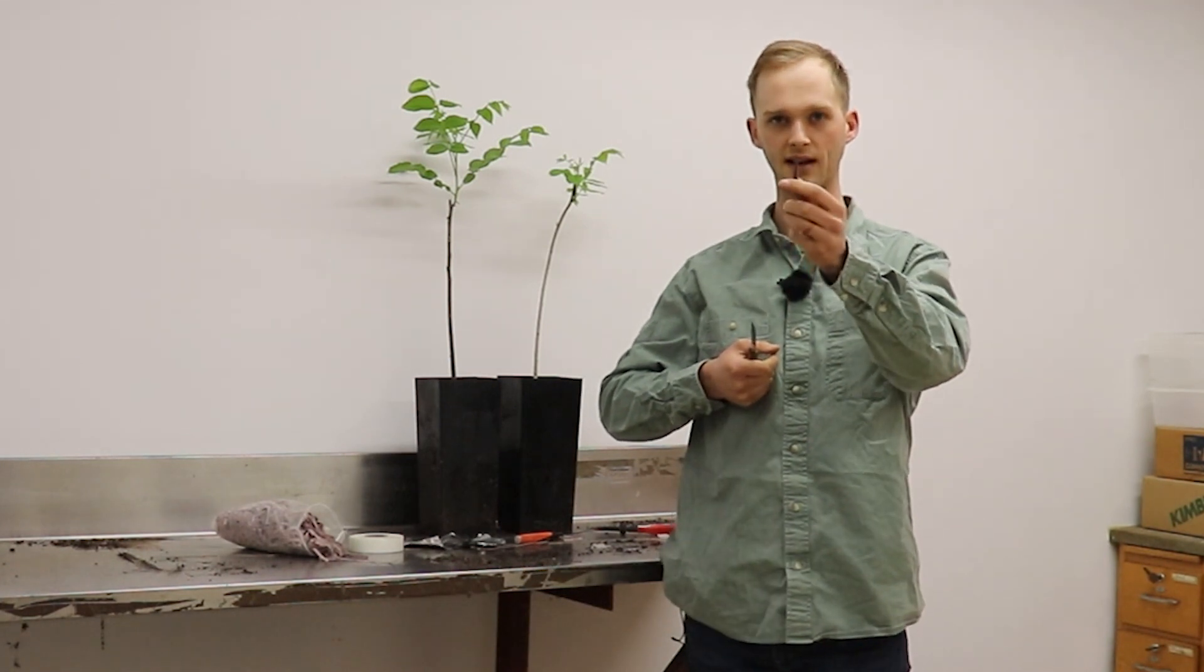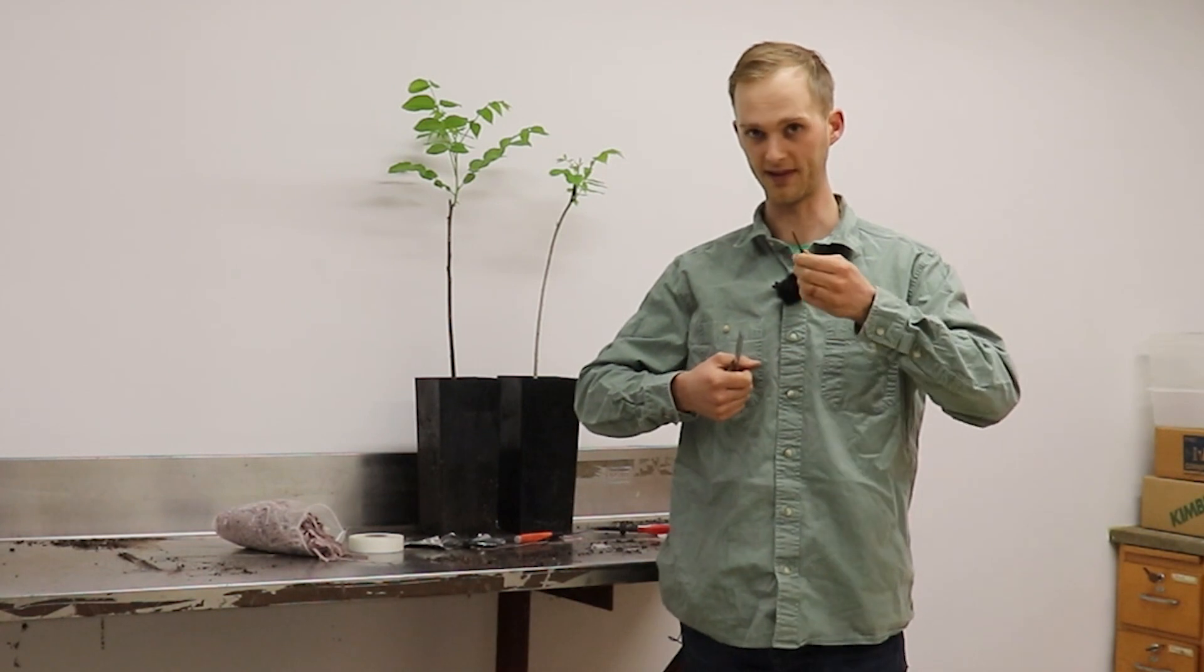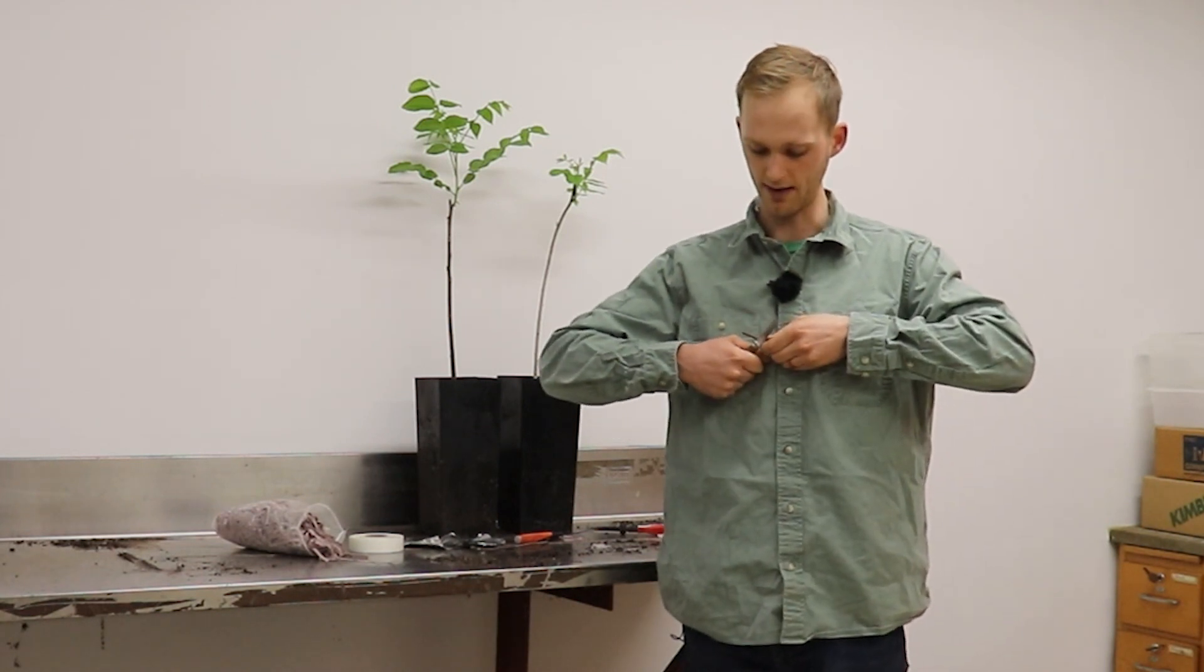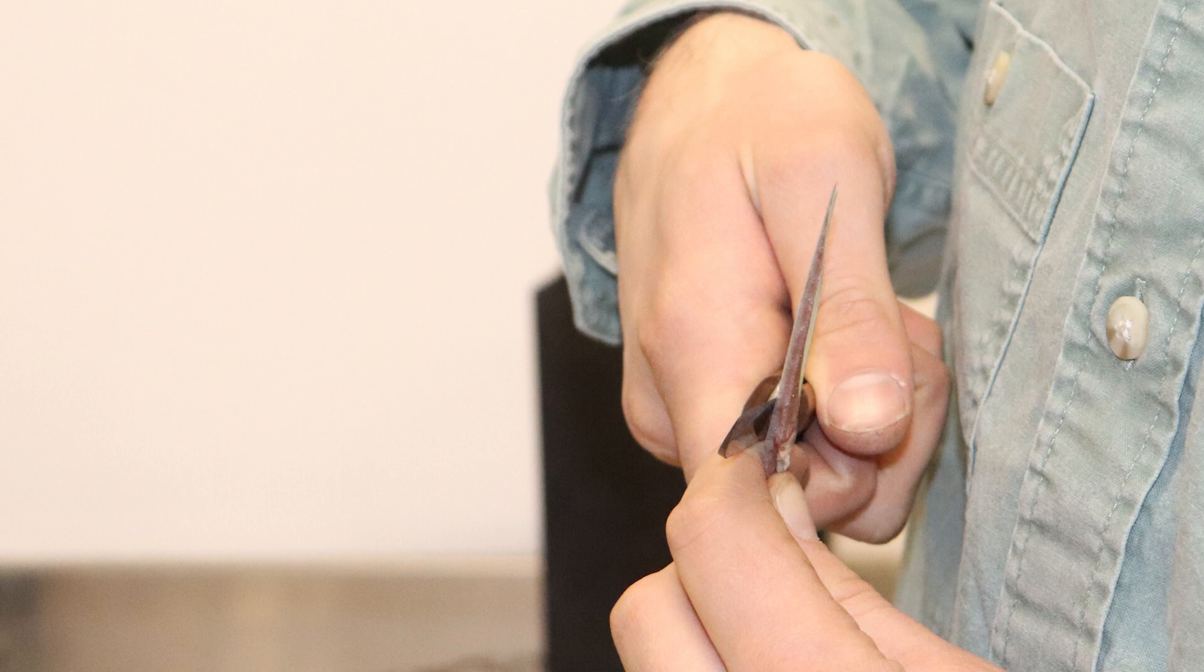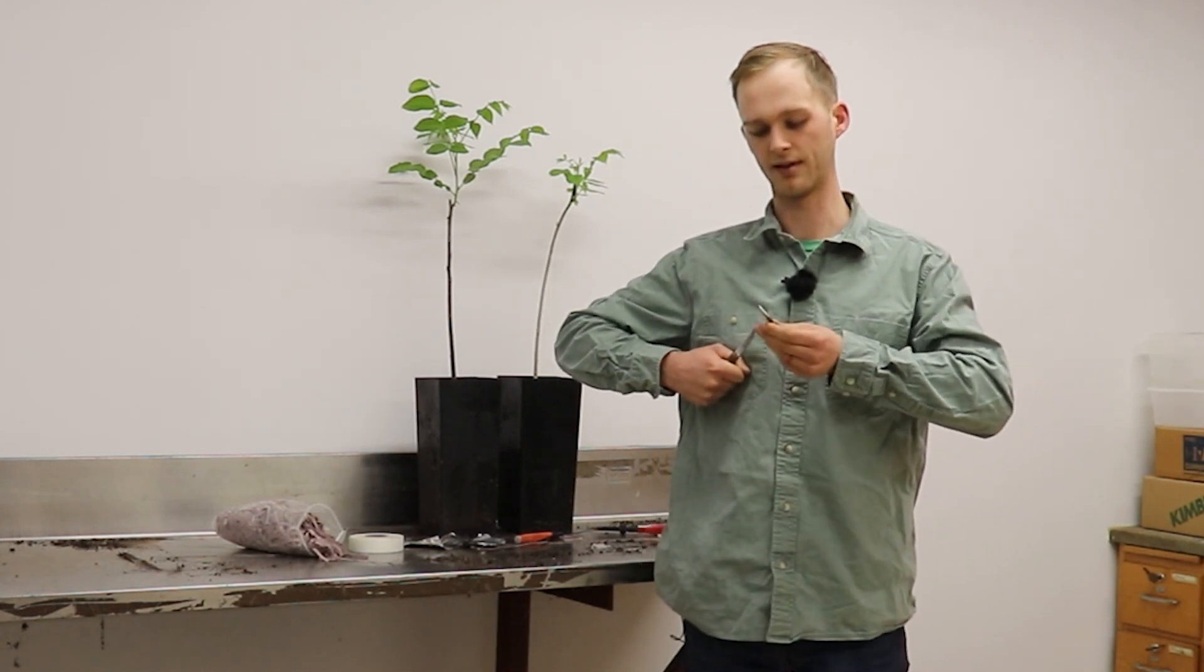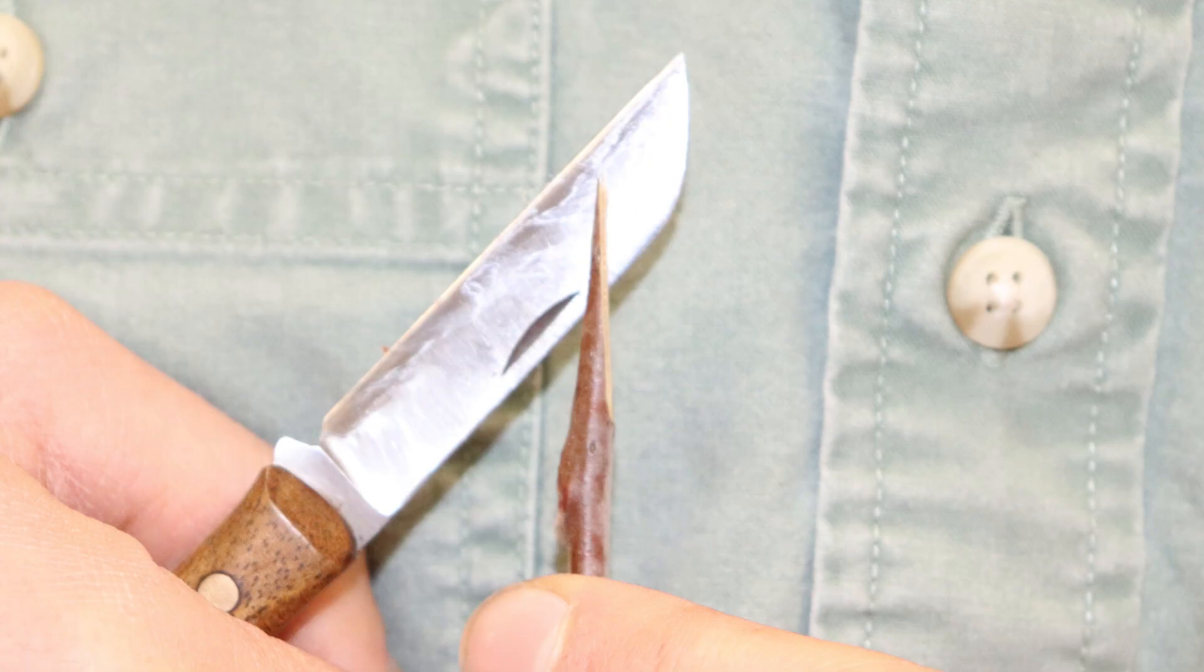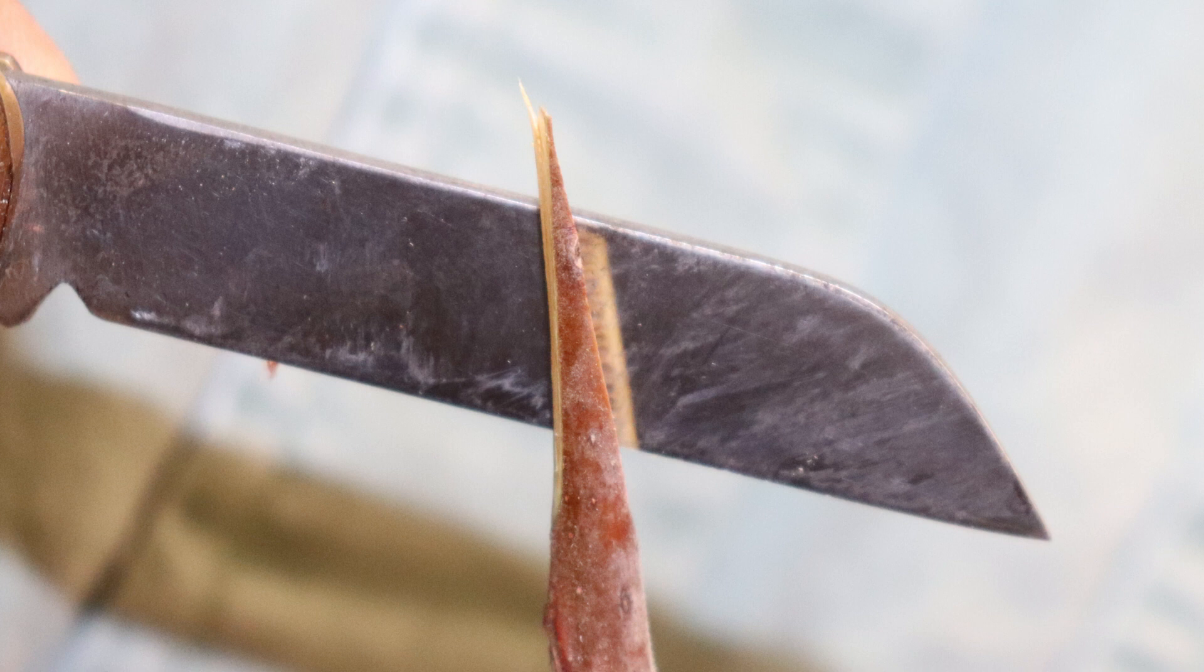So we have one side cut, and we flip it over, flip the scion over, and make another cut directly on the back side of your first cut. So when it comes down, you have a wedge where it's two flat cuts on either side of the piece to make a little wedge.